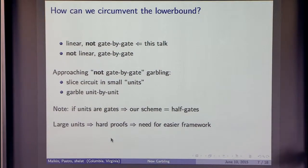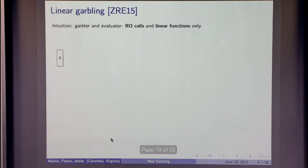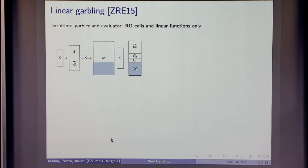I told you not gate by gate. Now I'm going to describe what linear means. And this is the slide to remember. So intuition. The garbler and the evaluator just do two things. They call the random oracle and then perform linear functions. So I'm the garbler. What do I do? I sample some random values, a vector of random values. I call the random oracle. I append these results at the bottom of my vector of random variable, and I call this vector S. And then I do the other thing that I can do, which is apply linear functions. Which means I just apply a matrix to S. And this is going to be the garbling. So you get the encoding information. These are the output wires, C0 and C1, and the garbled circuit.